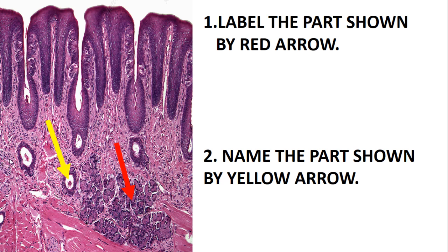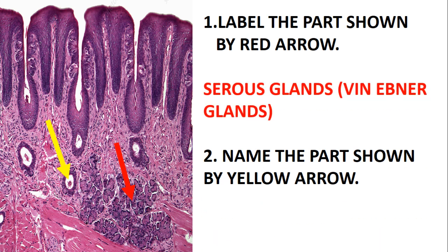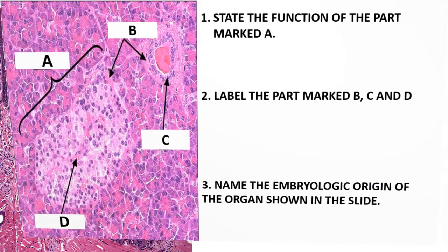The next slide asks you to label the part shown by the red arrow. This slide is just a slide of the tongue — you can see the taste buds there. The red arrow is pointing at the glands, which are the serous glands also known as von Ebner's glands. The part being pointed to by the yellow arrow is just the duct of the gland.